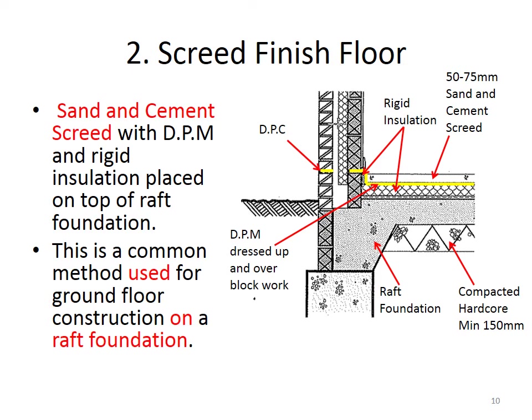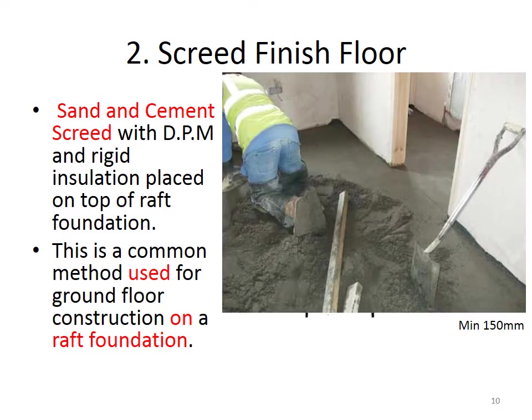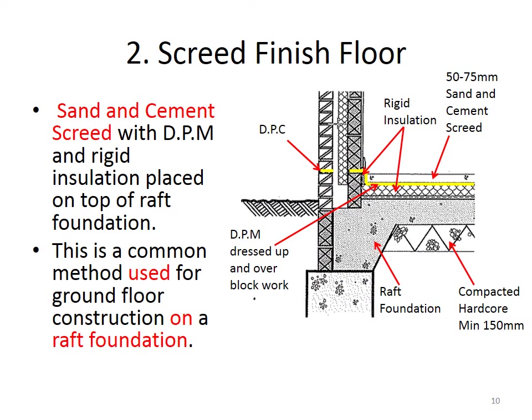The second type is the screed-finished floor. We have sand and cement screed — a fairly dry mixture of sand and cement — put in to the required thickness and depth and levelled off by hand. This is usually placed on top of a raft foundation. So we have our sand and cement screed with a damp-proof membrane and rigid insulation placed on top of a raft foundation, which is itself cast on top of compacted hard core. The DPM is dressed up and over the blockwork.